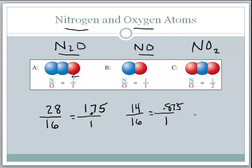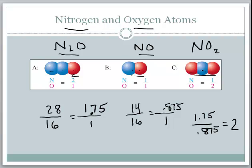The law of multiple proportions says: take those two values and make a ratio. So 1.75 divided by 0.875 gives the whole number 2. The same result would occur using other pairs of these compounds. What Dalton showed is that this is evidence that atoms exist — atoms show up in whole number ratios: 2 to 1, 1 to 1, 1 to 2.